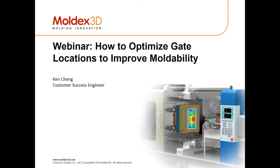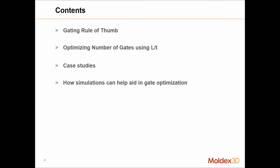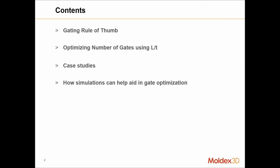How to optimize gate location in order to improve molding capabilities. First, I will give you the rules of thumb on how to gate and the number of gates using L over T, where L means flow length and T means thickness. Then I will show you case studies on how to use or optimize gate location.